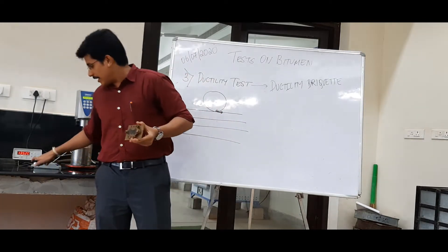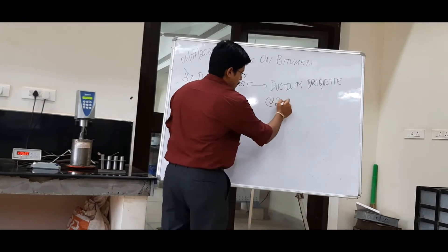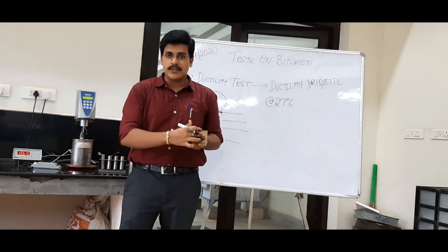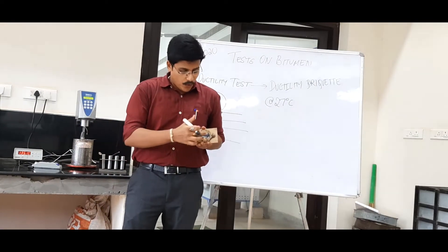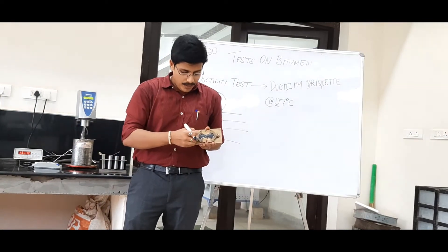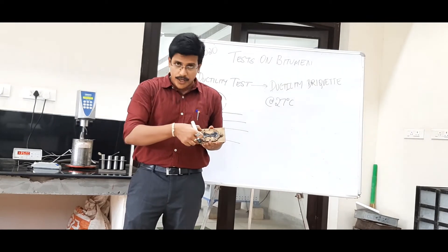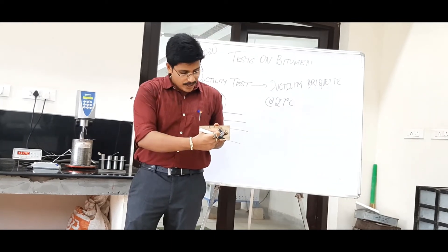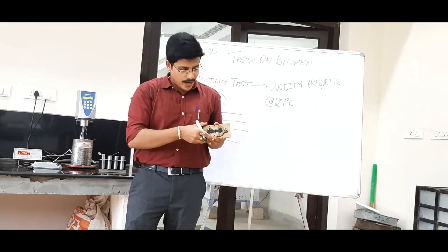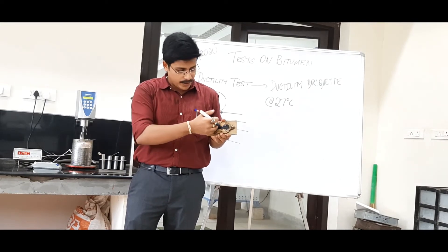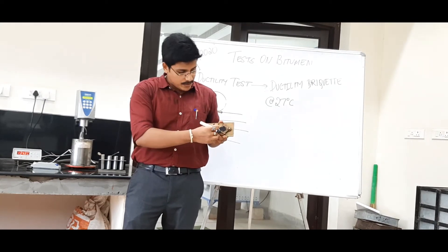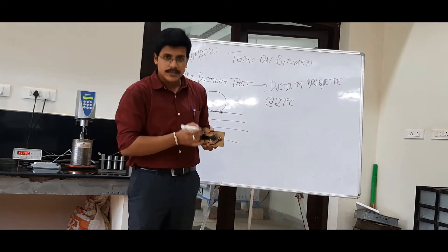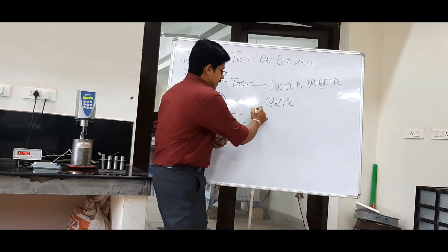This test is conducted at 27 degrees Celsius. In the ductility machine, you can see there are two pins — one pin gets fixed and the other pin is pulled, starting to pull the sample. So it starts fully extending. As we pull at a constant speed, it is drawn into a small wire. At some point it will break at the center. Wherever it breaks, we report that distance as the ductility value.